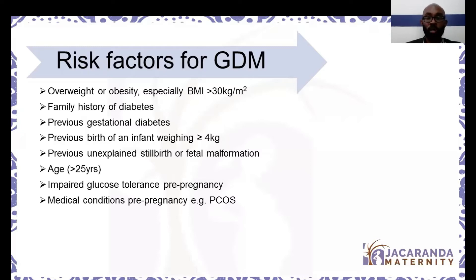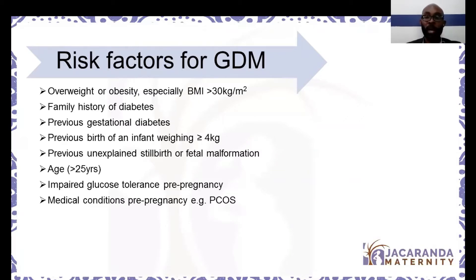Who is at risk of developing gestational diabetes mellitus? Not every pregnant mother will develop it. The common risk factors everyone should know include: being overweight or obese, especially a BMI above 30 kg/m² which increases the risk of GDM; a family history of diabetes in first-degree relatives like parents and siblings; a previous history of gestational diabetes; and a previous birth of an infant weighing four kilos or above.